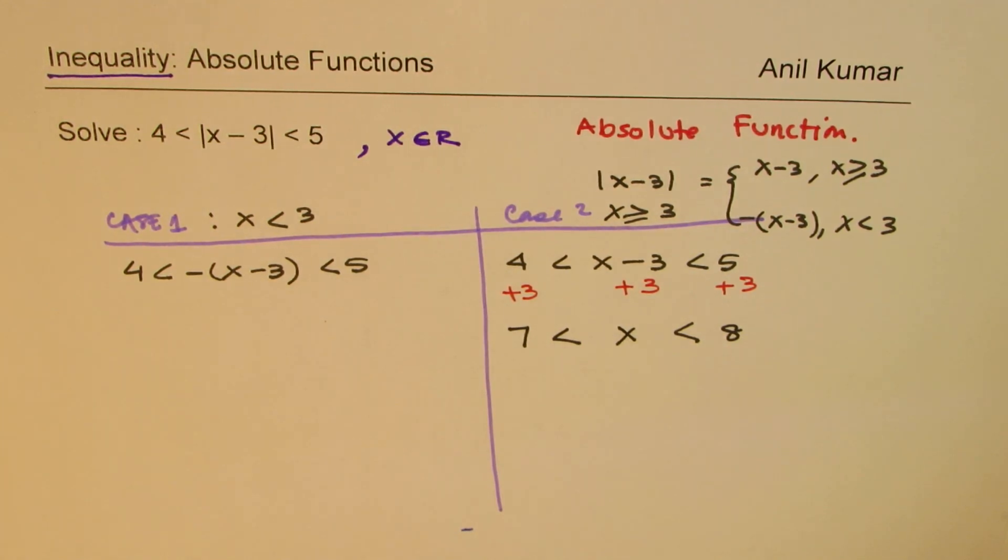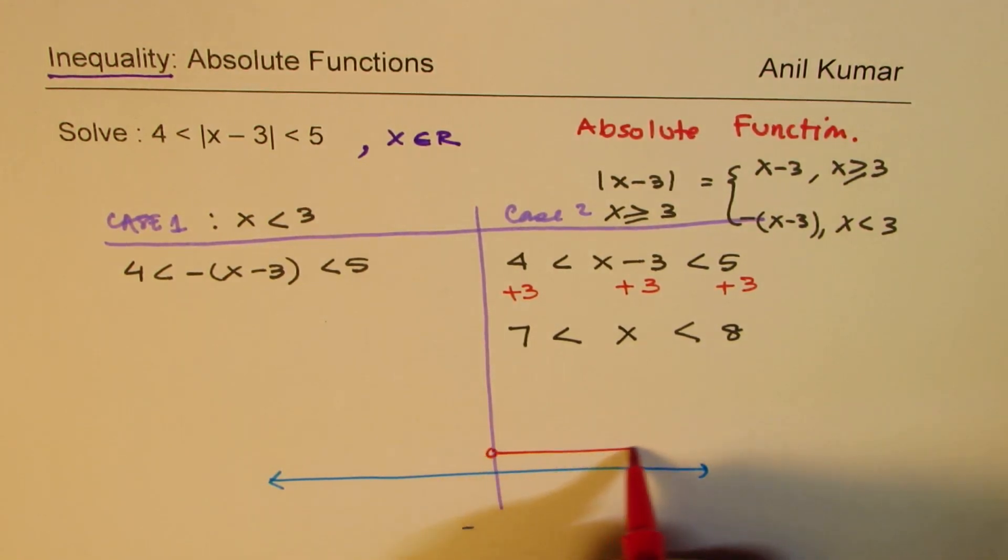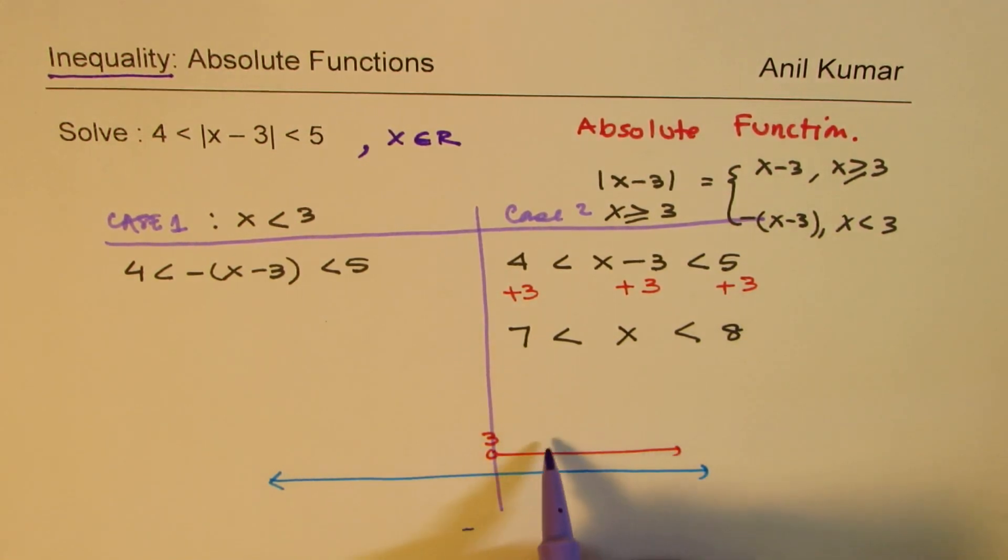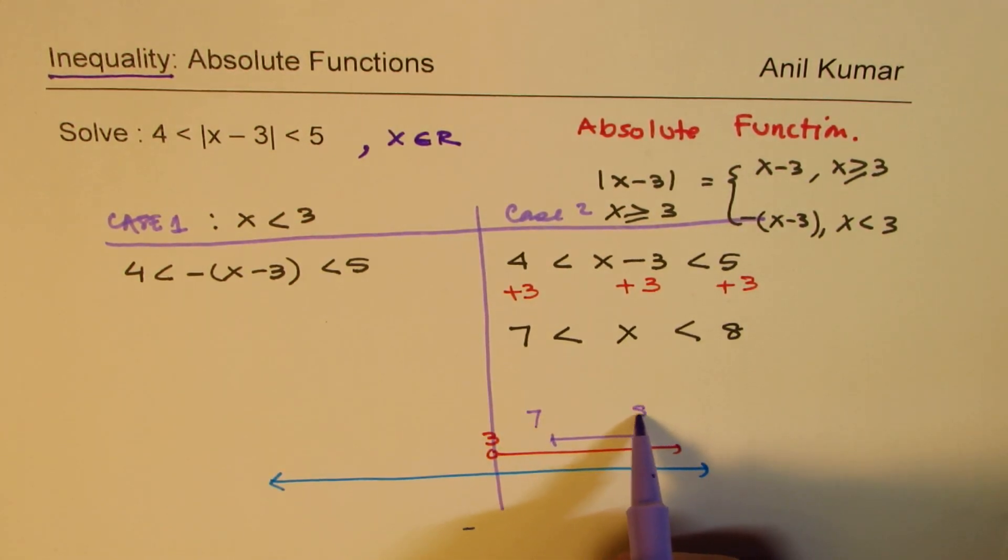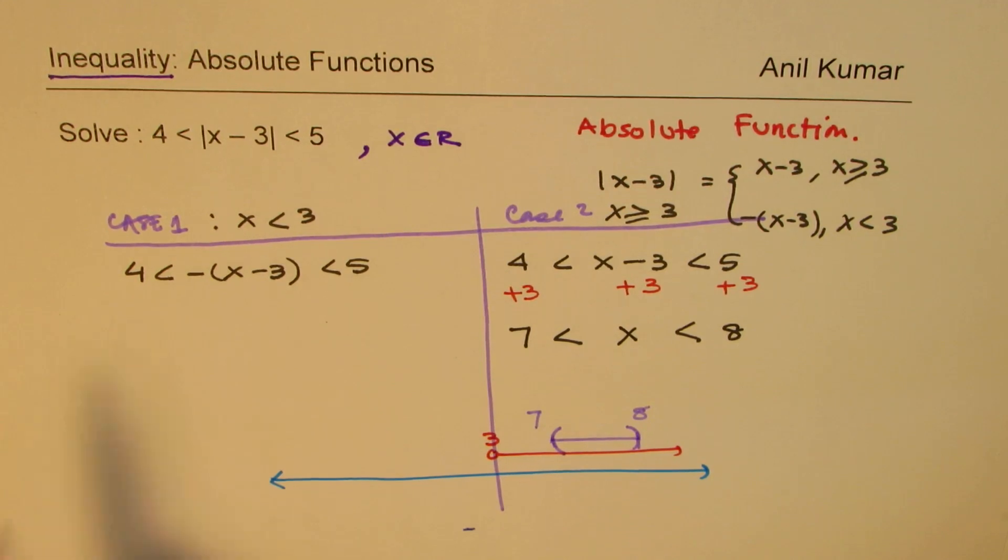On a number line, think like this. We were looking for solutions which were greater than 3, and we got two solutions which is between 7 and 8. Both are not included, so we will show it like this on a number line. Now let us see on the left side what is the situation.